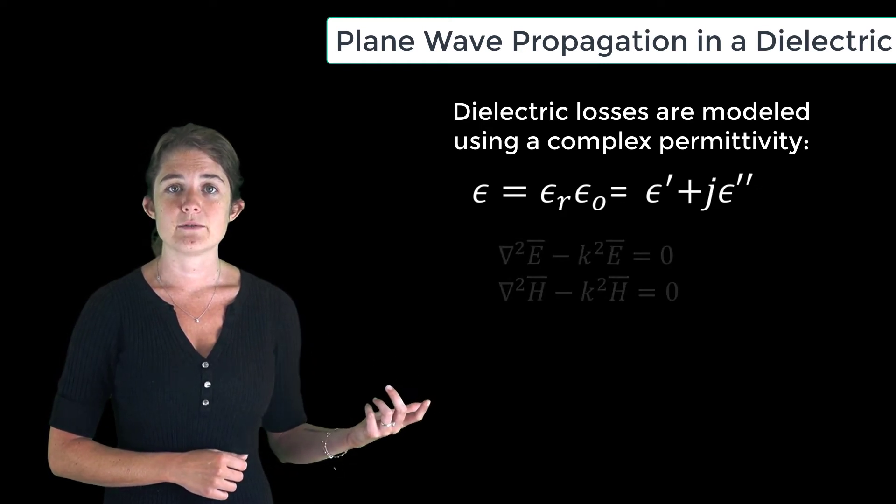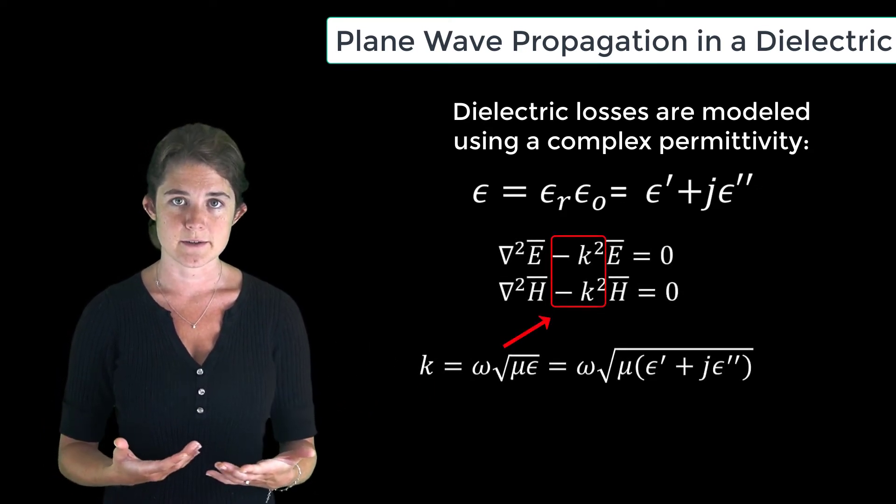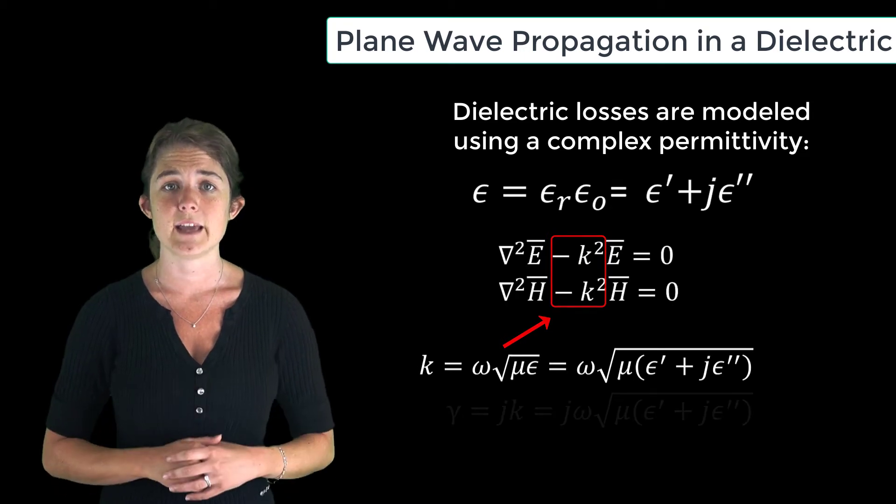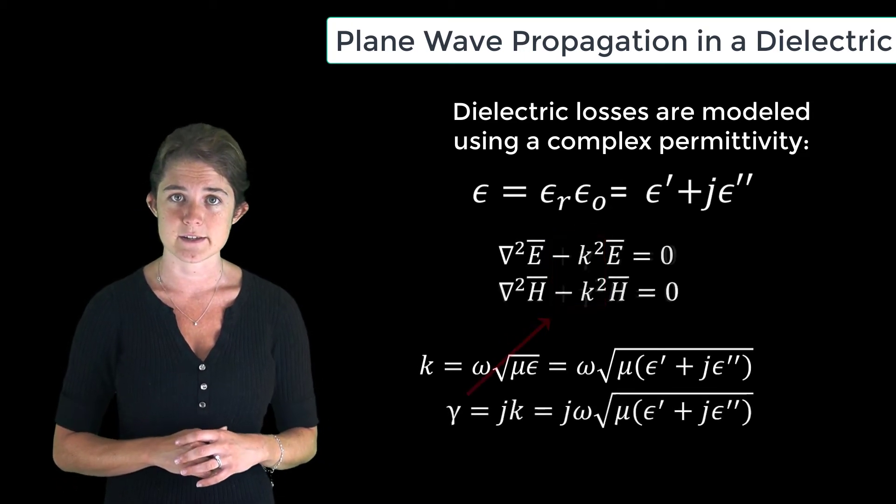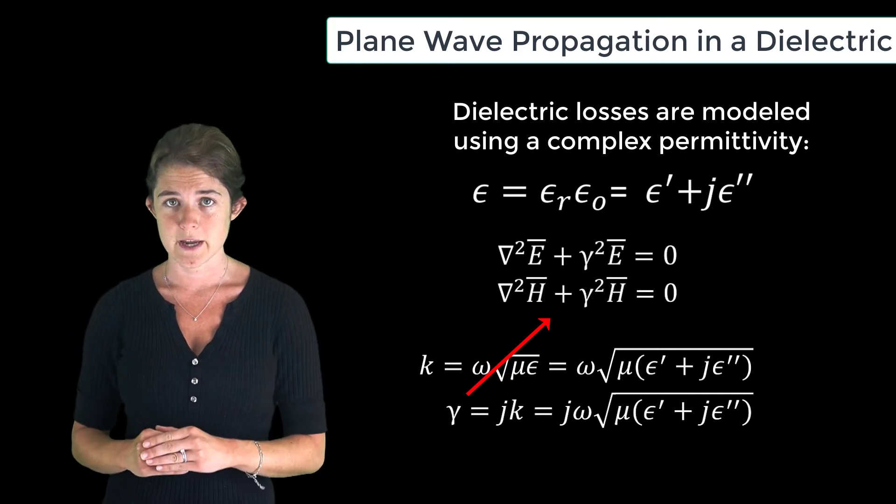In this case, the wave equations will have to use a complex propagation constant. So we will define gamma as the complex propagation constant. Gamma is equal to j times the wave number k.